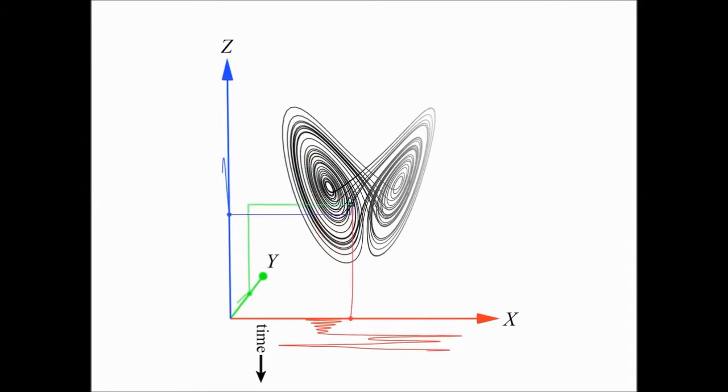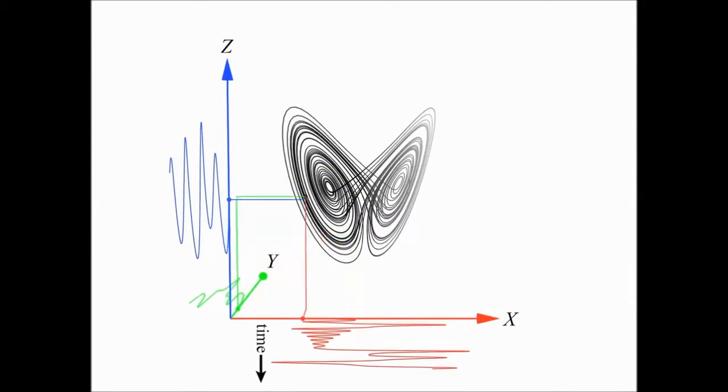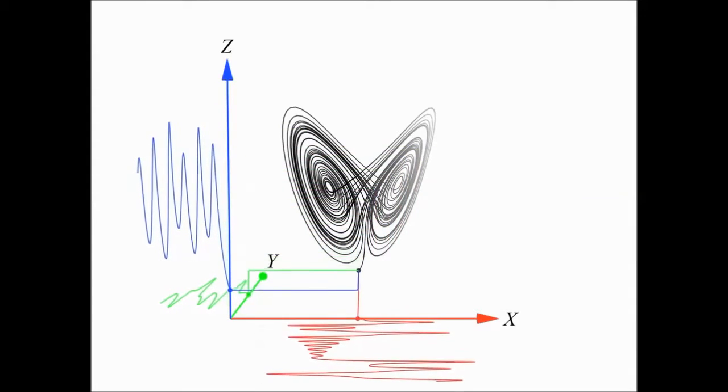This can be repeated on the other coordinate axes to generate other simultaneous time series. So these time series are really just projections of the manifold dynamics onto coordinate axes.